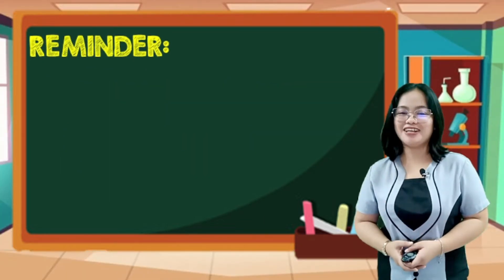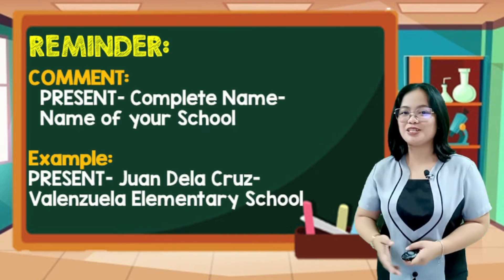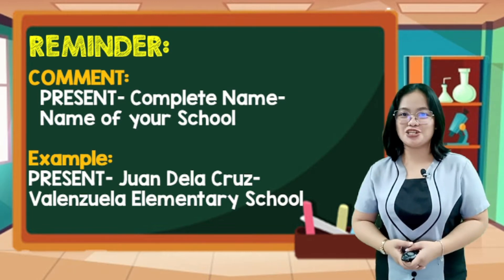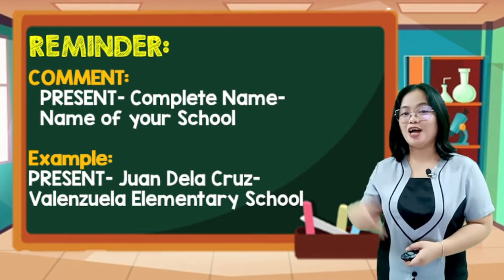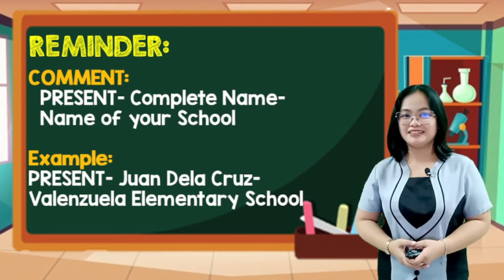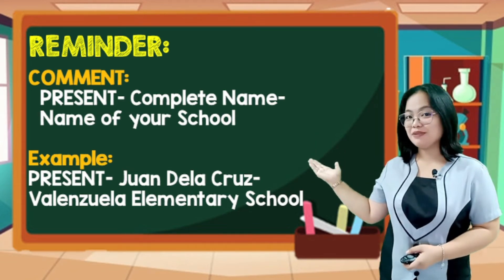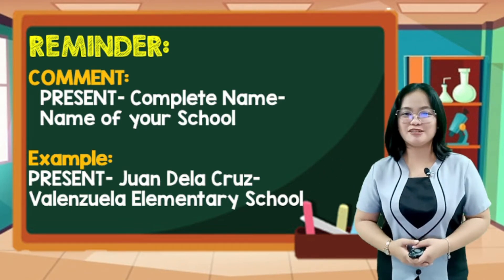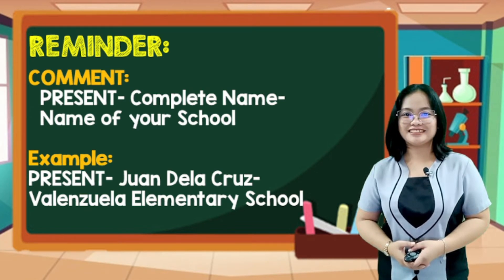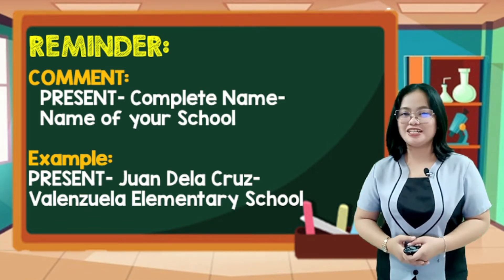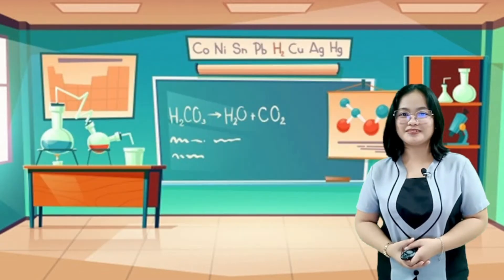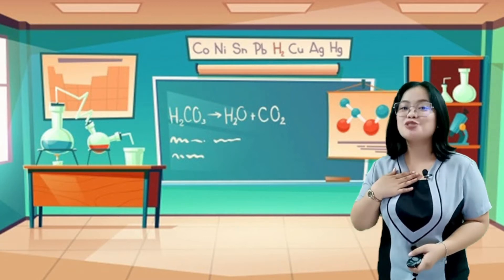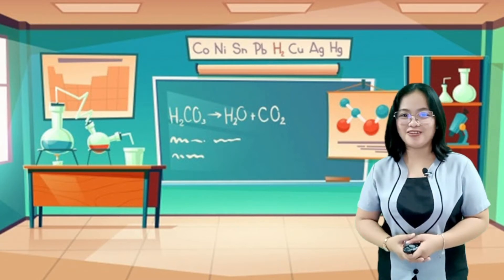Before we start our lesson, allow me to give you some reminders to observe during our FD Live discussion. Upon entering the live session, you need to type the following information in the comment box: comment 'present,' plus your full name, and the name of your respective school. This is to acknowledge your attendance for today. Just comment your answers or questions in the comment section below. Now that everything is clear, I am sure that you are ready for today's discussion.